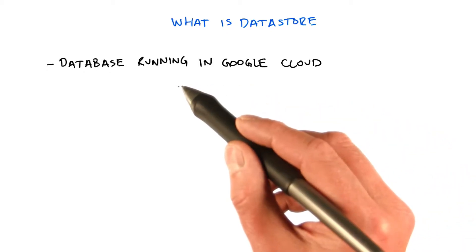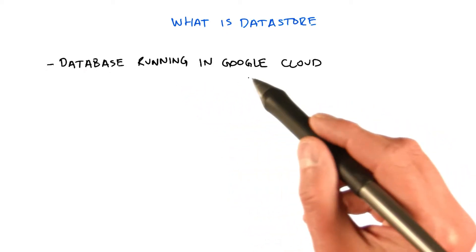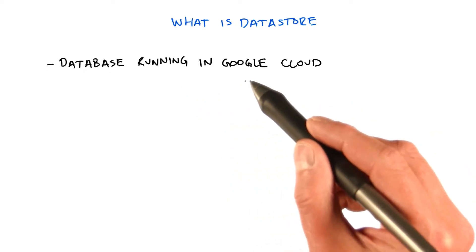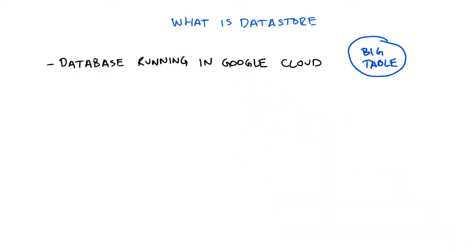Datastore is a database that runs in the Google Cloud and is available to any App Engine application. As you already heard, it is built on Bigtable, which is used by many of the huge services being run at Google. So that also gives Datastore unlimited scalability. Please see the instructor comments for more information on Bigtable.